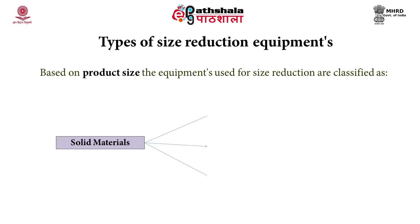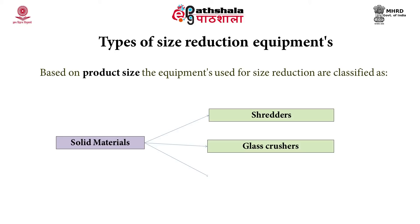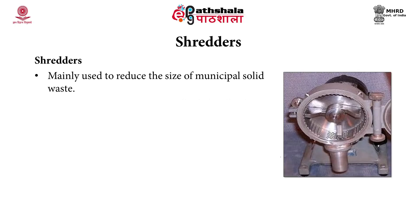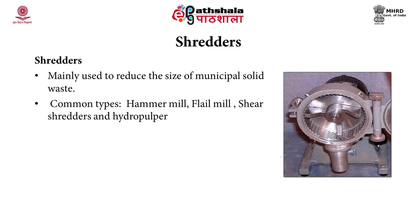The types of size reduction equipments are: shredders, glass crushers, and wood grinders. Based on the required product size, one among these can be chosen. Shredders are mainly used to reduce the size of municipal solid waste. Common types of shredders include hammer mill, flail mill, shear shredder, and hydro pulper.